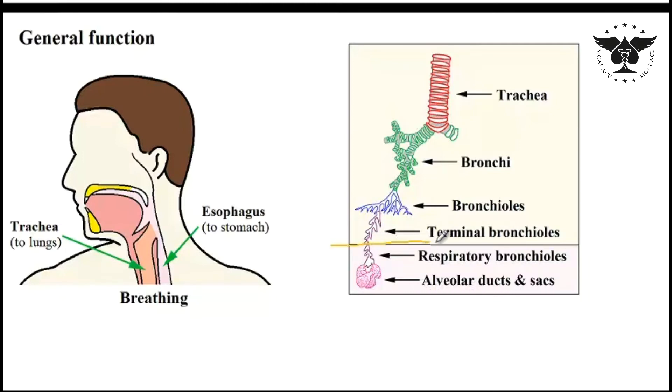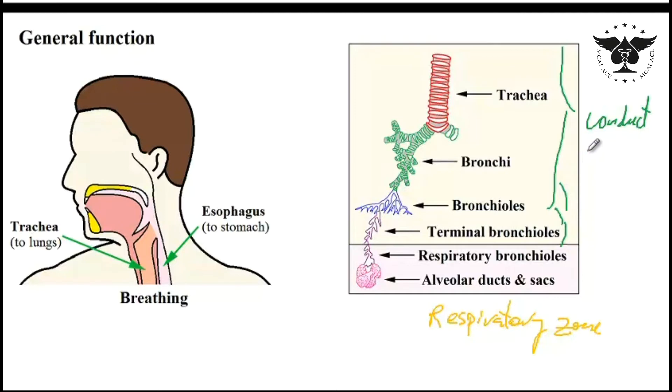It's actually gas exchange that happens in these two last structures. That's why I've shown these two structures in pink because these are the respiratory zone where gas exchange can happen. The rest of the structures shown here are just for conducting air all the way down to the respiratory zone but basically these are not involved in gas exchange.